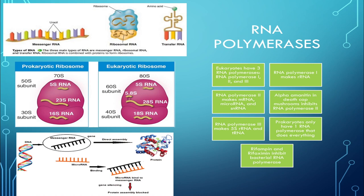Another way to remember: RNA polymerase 1 makes rRNA, RNA polymerase 3 makes tRNA as well as the 5s rRNA, and the rest is made by polymerase 2.